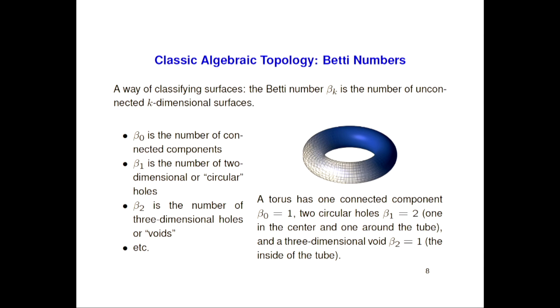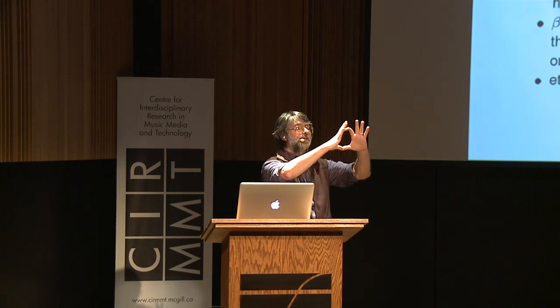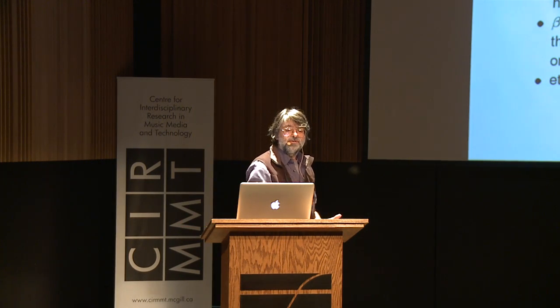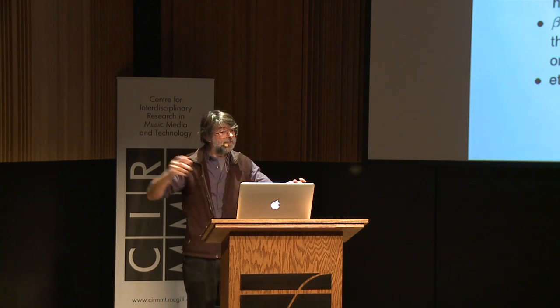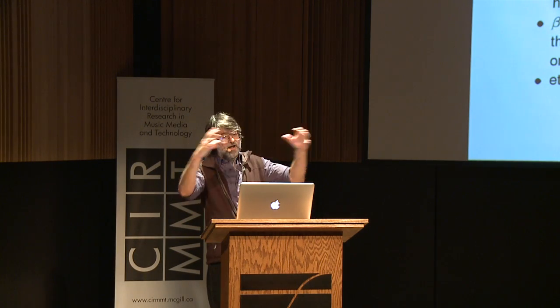Betti numbers come in a series. Betti zero tells you how many connected components you have — so if we had three separate groups, Betti zero would be three; that's the number of classes in a classification problem. Betti one is how many circles or holes there are — a circle is defined by something missing in the center, and that's the hole. Then Betti two is the number of three-dimensional holes, Betti three is four-dimensional holes, and so on. A classic example: the torus has one connected component, two circular holes so Betti one is two, and one three-dimensional void so Betti two is one.